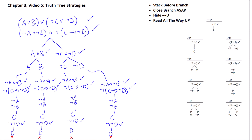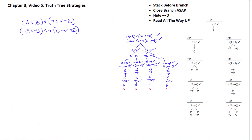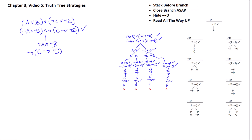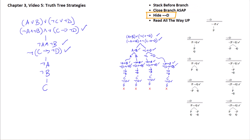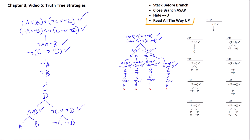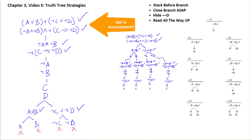Here are the same two formulas again, now applying stack-before-branch. We take care of the conjunction first and wait on the big disjunction. That gives us a stack; we decompose each part, which also stack — getting not-A / not-B, then C and D (hiding the double negation on not-not-D). Now we branch to check off the first formula. Reading up these branches: A / not-A on the first, B / not-B on the second, not-C / C on the third, not-D / D on the fourth — all four branches close. Much simpler tree, same result.